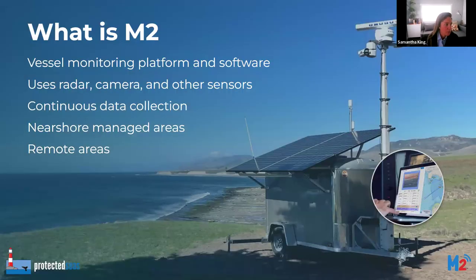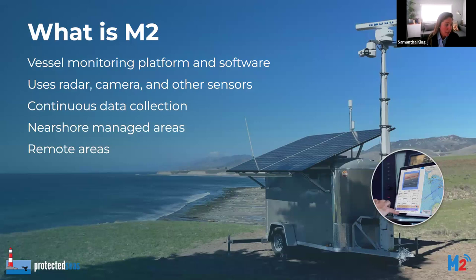M2 is a vessel monitoring platform — both the physical system and the software. It uses radar, a camera, and other sensors to monitor nearby vessel activity from shore, and it collects data fully autonomously and continuously 24/7. It's really ideal for monitoring nearshore managed areas and can be especially useful for monitoring remote areas. In this image here, you can see all those M2 components — the radar, camera, and a few other sensors — fully integrated in this off-grid system, which is actually monitoring a pretty remote area of the California coast.